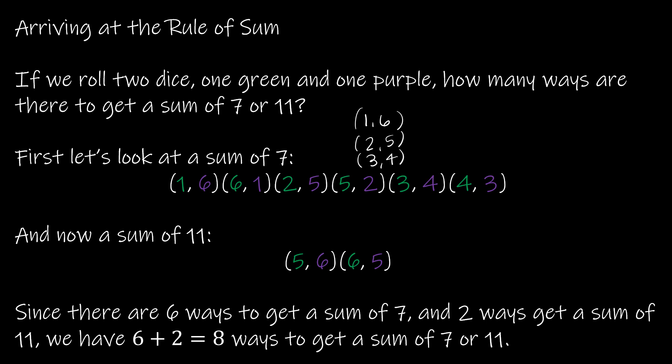Now for a sum of 11, again, five and six, six and five. So I had six total ways here. I had six ways to get seven, and I had two ways to get 11. And so there are a total of eight ways that I could get either a sum of seven or a sum of 11.